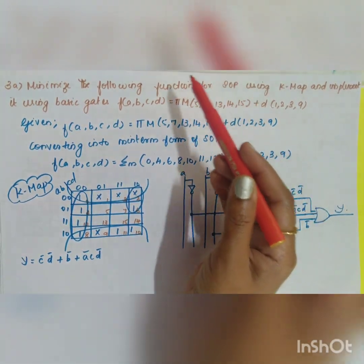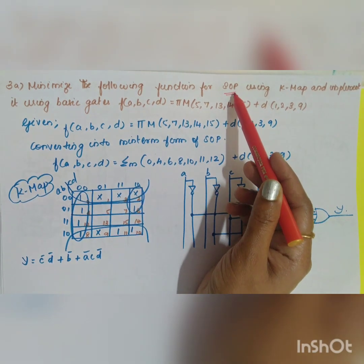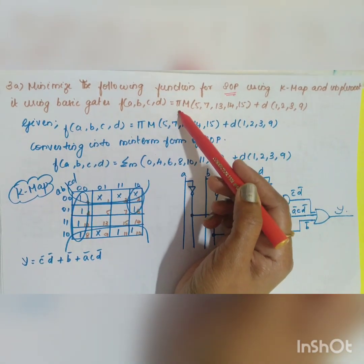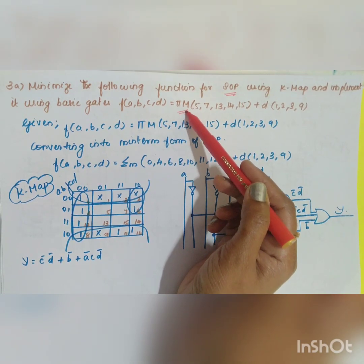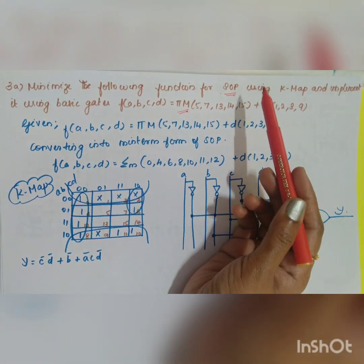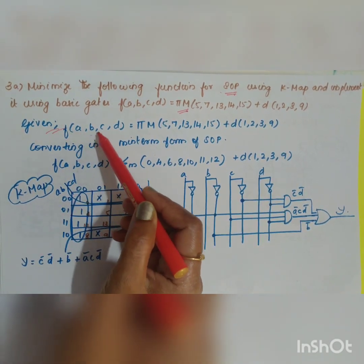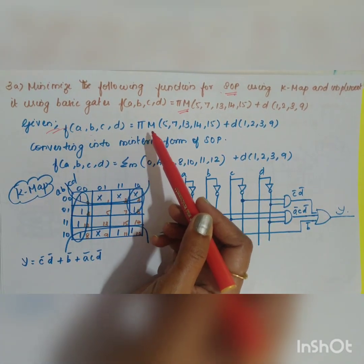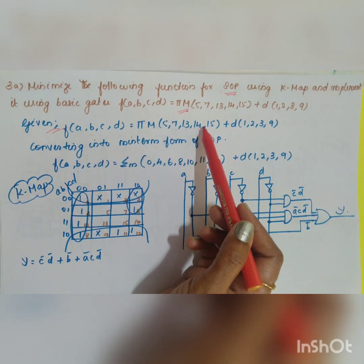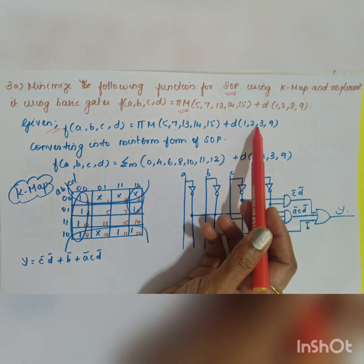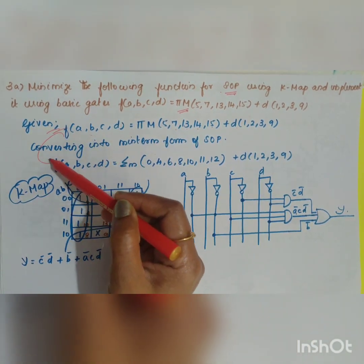The question asks to minimize for sum of products, but the function is given in terms of product of sum. So the first step is to convert this product of sum into sum of product. Given f(a, b, c, d) is equal to pi of max terms 5, 7, 13, 14, 15 plus d of 1, 2, 3, 9.